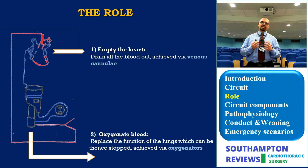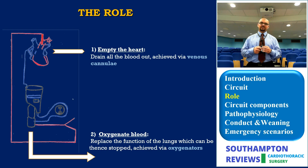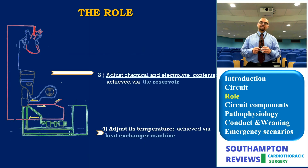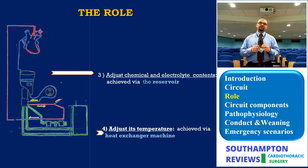The second role is oxygenating the blood, allowing us to substitute the function of the lungs, switching the lungs off and preventing their motion, hence achieving a still field. These are the first two primary roles of bypass, and that's initially why bypass was originally developed.